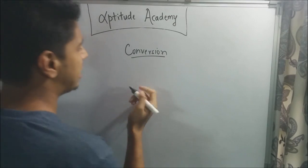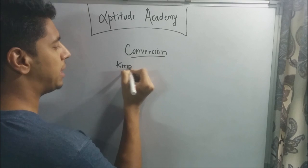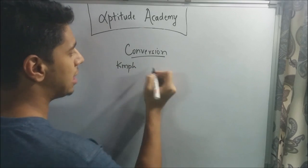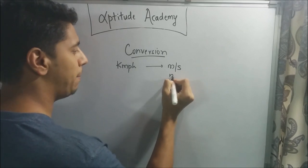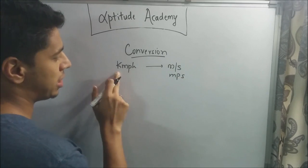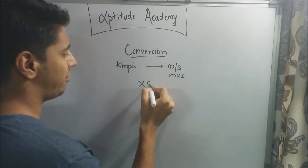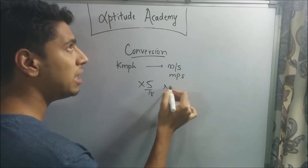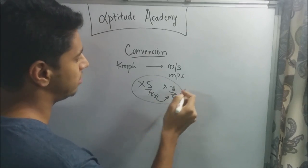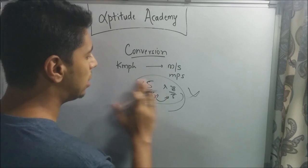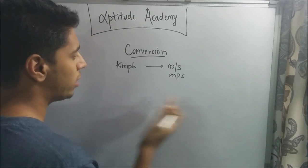For conversion, in most problems they'll give you some speed in kmph — that's kilometers per hour — and ask you to convert it to meters per second. Now, everybody knows we have to multiply by 5/18 or 18/5, but no one really knows which, and if you make the wrong choice, it's all wrong. So what we'll do is simply derive the formula so that you won't have to remember it.